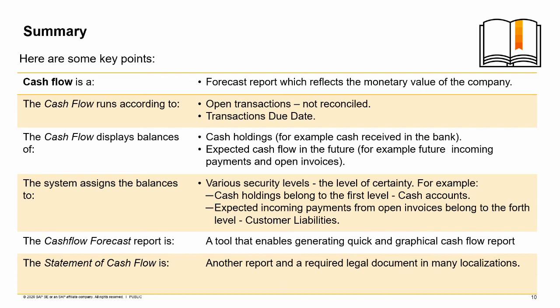For example, cash holdings belong to the first level — cash accounts — while expected incoming payments from open invoices belong to the fourth level, customer liabilities. The cash flow forecast report is a tool that lets you generate a quick, graphical cash flow report. The statement of cash flow is another report and a required legal document in some localizations. You have completed the topic on cash management reports. Thank you for your time.